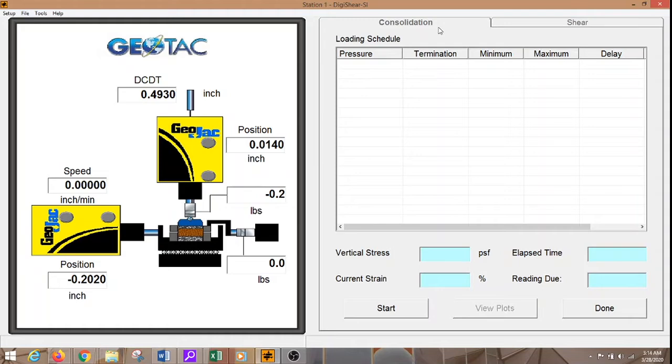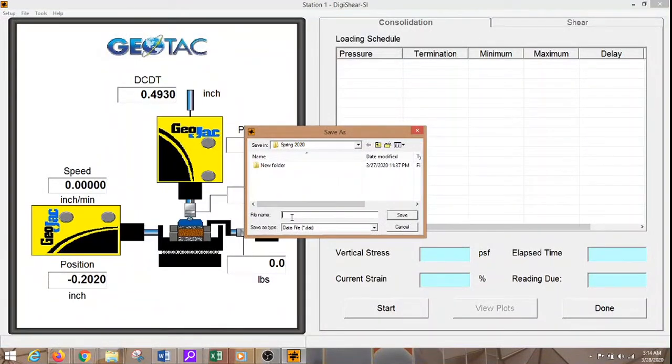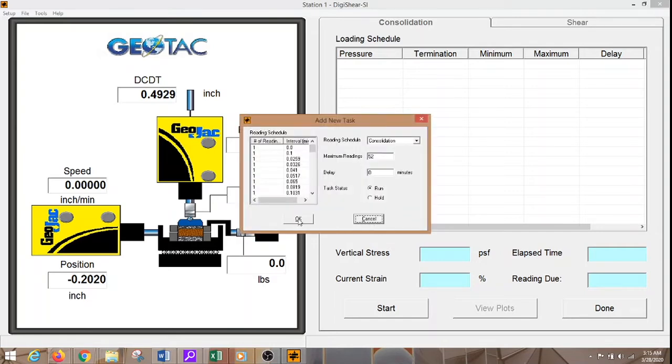The test is divided into two, the consolidation and then the actual shear. To start the test we will go to tools and create a new task. I have created the folder Spring 2020. And I will just enter the test that we are going to run. Like I said before we will be running this test for 1 TSF, 2 TSF, 3 TSF and 4 TSF. This will be the first one and it will be 1 TSF. I will save that and I will say OK.